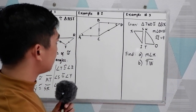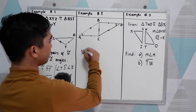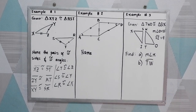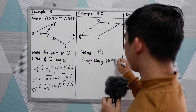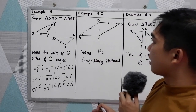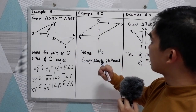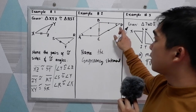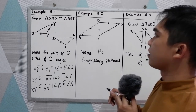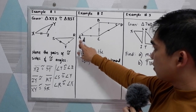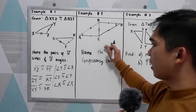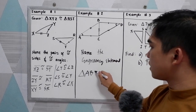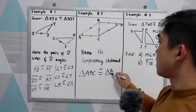For example number two, name the congruency statement. We have two triangles: triangle ABC and triangle BCD. Using the markings, we can identify that angle A is equal to angle D, and the corresponding sides and corresponding angles match. So we can conclude that triangle ABC is congruent to triangle BCD. That will be the congruency statement.